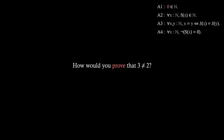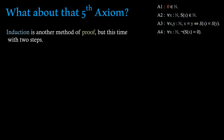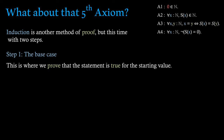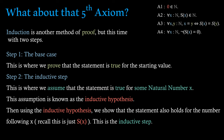Now, what about that fifth axiom? I called it induction. This is a way of proving something, and it uses two steps. Firstly, we prove something for the base case — where we prove a statement is true for the starting value; for example, in the natural numbers, we'd prove something for zero. Then we prove the inductive step: we assume the statement is true for some natural number x, known as the inductive hypothesis, and then using this hypothesis we show that the statement holds for the number following x, which is just the successor of x.